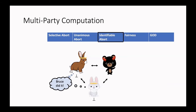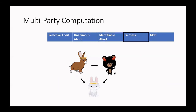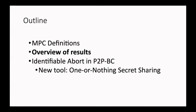The notion of fairness is incomparable with the notion of identifiable abort. Finally, we can consider the notion of guaranteed output delivery, which says that no matter what the adversary does, the honest parties will learn the output of the computation. We will proceed now to give an overview of our results.